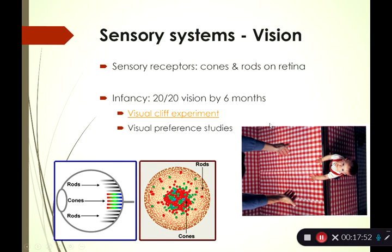If we look at the development of the visual system across the lifespan — when you're born is when you first open your eyes and start using them. By six months old, most babies will have 20-20 vision. We can see through different studies the development of depth perception — your ability to see how far away something is — and also visual preferences. To study depth perception, there's been a fascinating method called the visual cliff experiment.